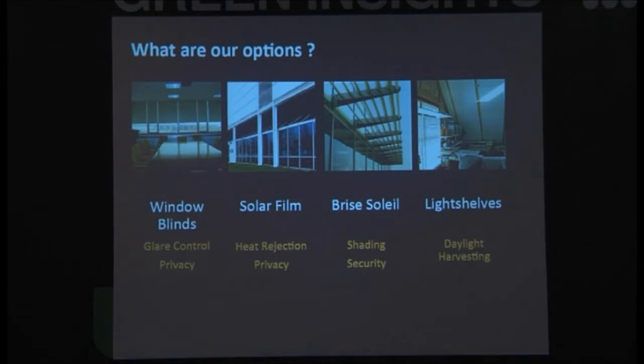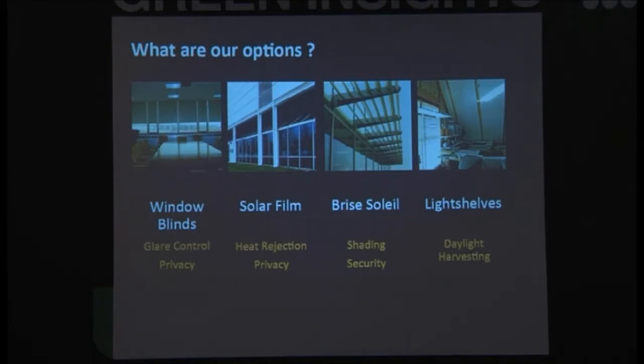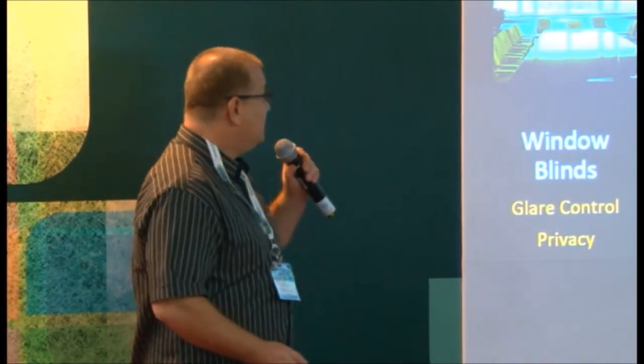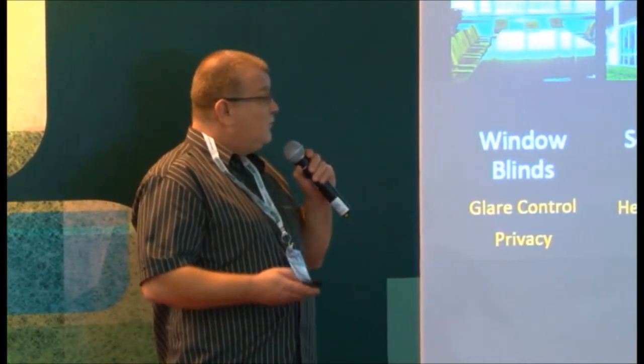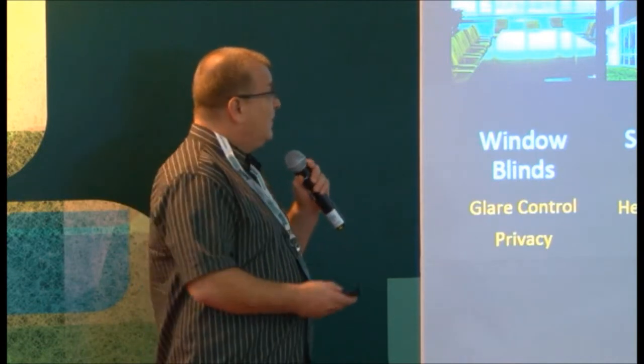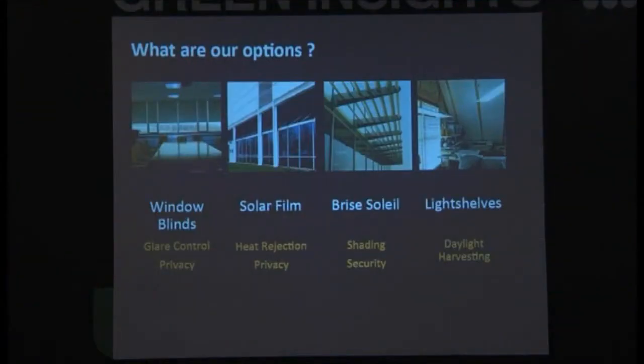So what are our solutions? Our solutions are window blinds, solar film, brise soleil and light shelves. Window blinds are great. They stop glare. But so do sunglasses and lots of other things. As I mentioned earlier, one of the problems with window blinds is the heat builds up behind them. Solar film, yes, it rejects heat. In some cases, to get the best heat rejection, we actually reduce the amount of light. One of the things it doesn't do is reduce a significant amount of glare. Brise soleil gives us exterior shading. Light shelves, because they work on direct reflection of light, and the sun moves up very quickly in Malaysia. Unless they're in the direct path of the sun, we don't really get much benefit from them.